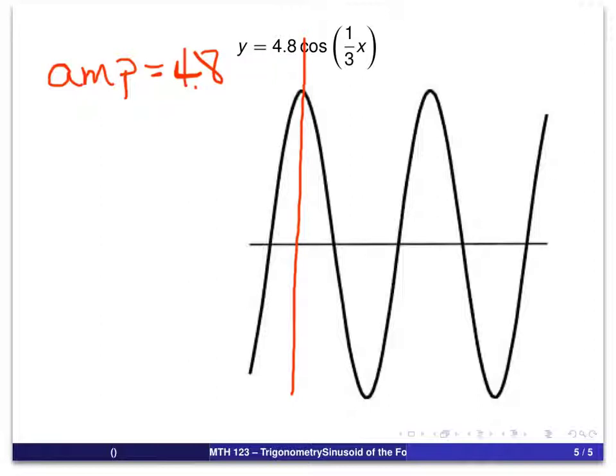And the coefficient of 4.8 tells me that I have an amplitude of 4.8. Or, in other words, the y-value is going to be strictly between minus 4.8 and 4.8.